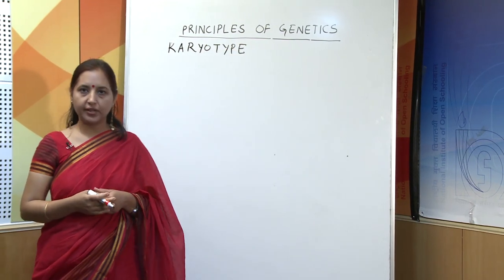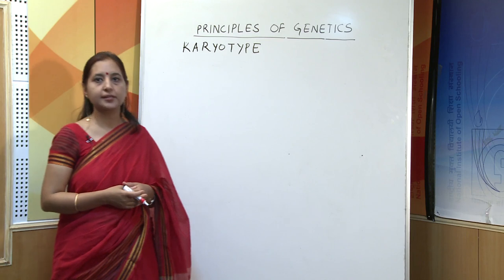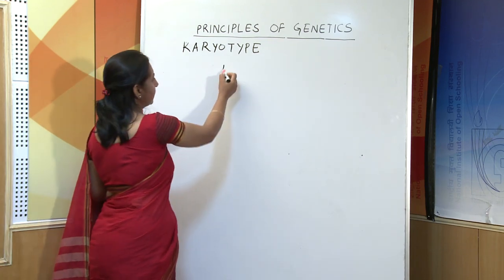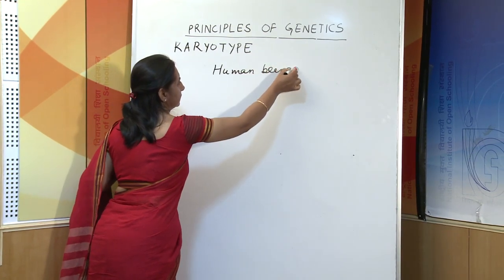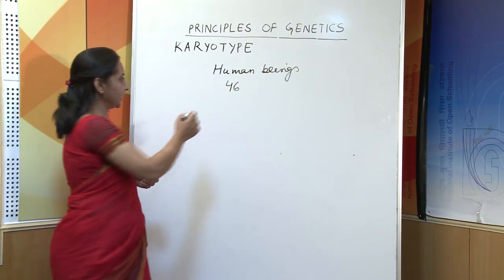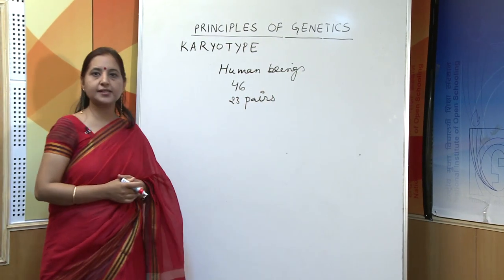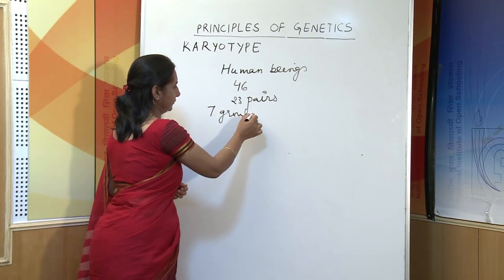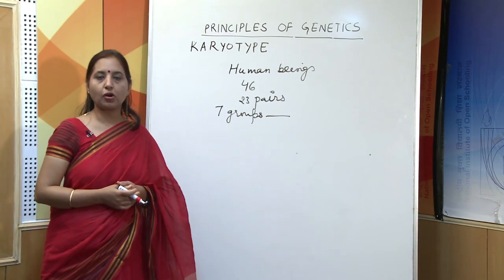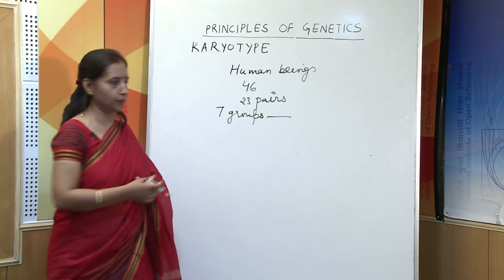The next topic is karyotype. Karyotype is the arrangement of chromosomes on the basis of their size and the location of the centromere, and this complete arrangement is called karyotype. In the case of human beings, there are 46 chromosomes — that is, 23 pairs — and they are arranged in 7 groups. The basis of classification is their size and the position of the centromere.